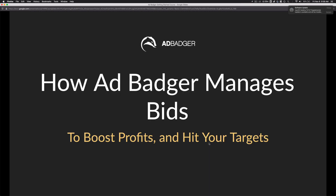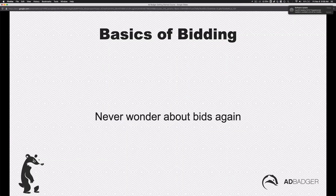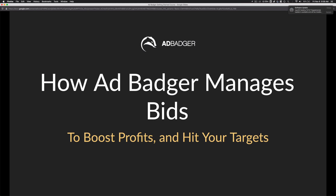So the basics of bidding with Ad Badger is you don't have to wonder about your bids again. In the next video, I'm going to show you how Ad Badger handles that. You can turn it on and not have to worry about calculations and formulas because Ad Badger has two modes: an automated mode that you can just turn on and let the algorithm get to work, which factors in all kinds of things — and it's also got a manual mode if you want manual control. Let's jump into the next video and jump inside Ad Badger.